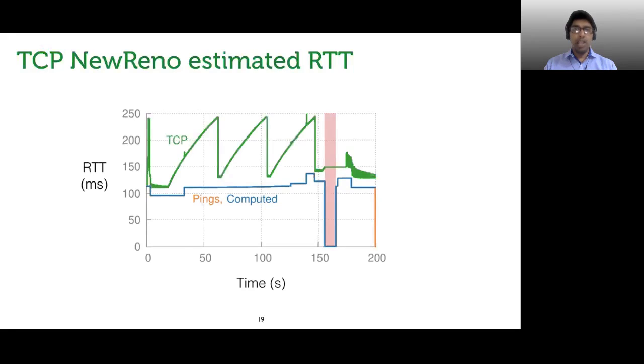Finally, in NS3, we can also run a TCP new reno flow between the two locations, which was otherwise impossible with NetworkX. Because of changing queuing delay, TCP RTTs fluctuate over time, which is evident from the plot.